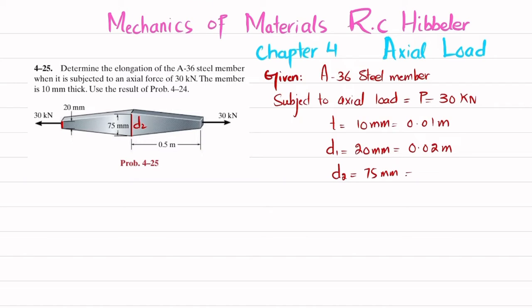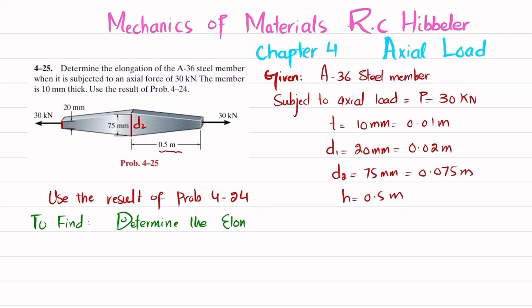Also, you can see that this is the height of half of the portion, and this height is taken as 0.5 meters. So it is also given that we use the result of problem 4-24. We will take the results from that which we solved in the previous problem. What we have to find is the elongation. Let's start its solution.